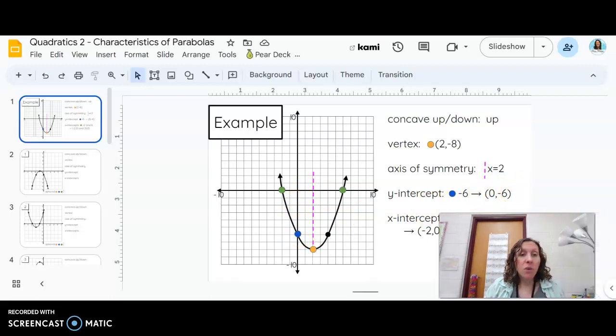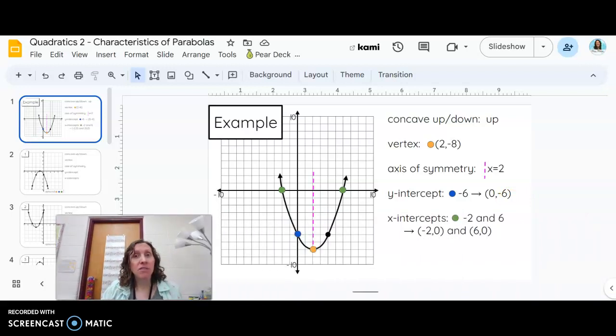And then we also have x-intercepts. So if the parabola crosses the x-axis, each time it does, those points are called the x-intercepts. So we have one here at negative two, and over here at positive six, and these are the coordinates.